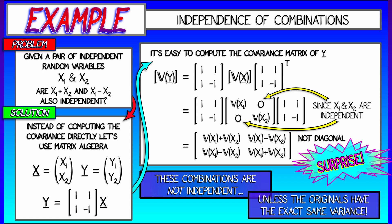But, if we have the originals having the exact same variance, if V of x1 equals V of x2, then this is a diagonal matrix. And in that case, these two combined random variables are independent.